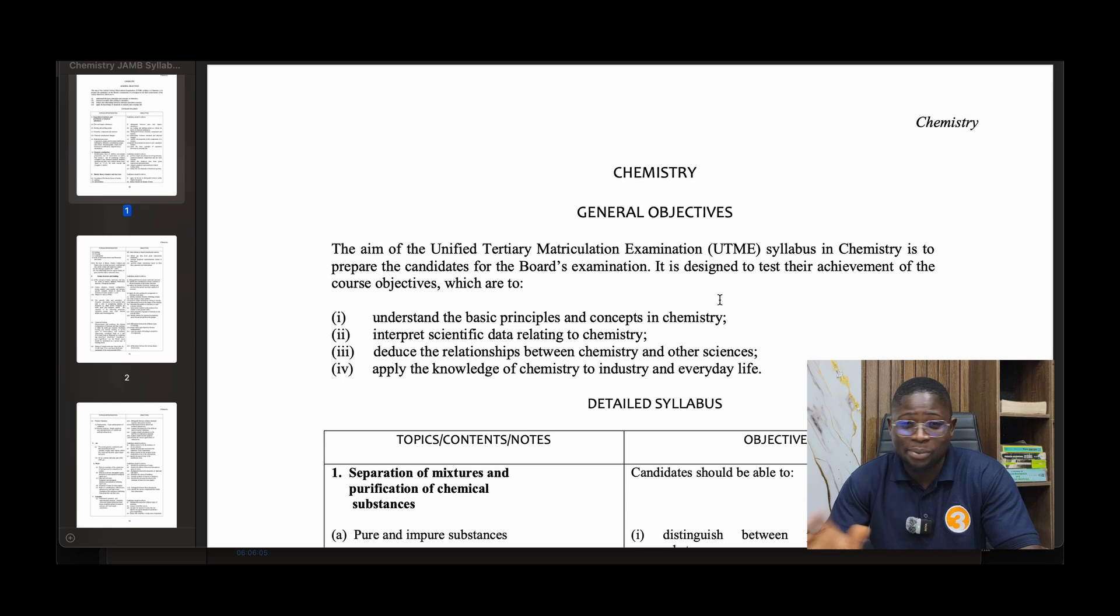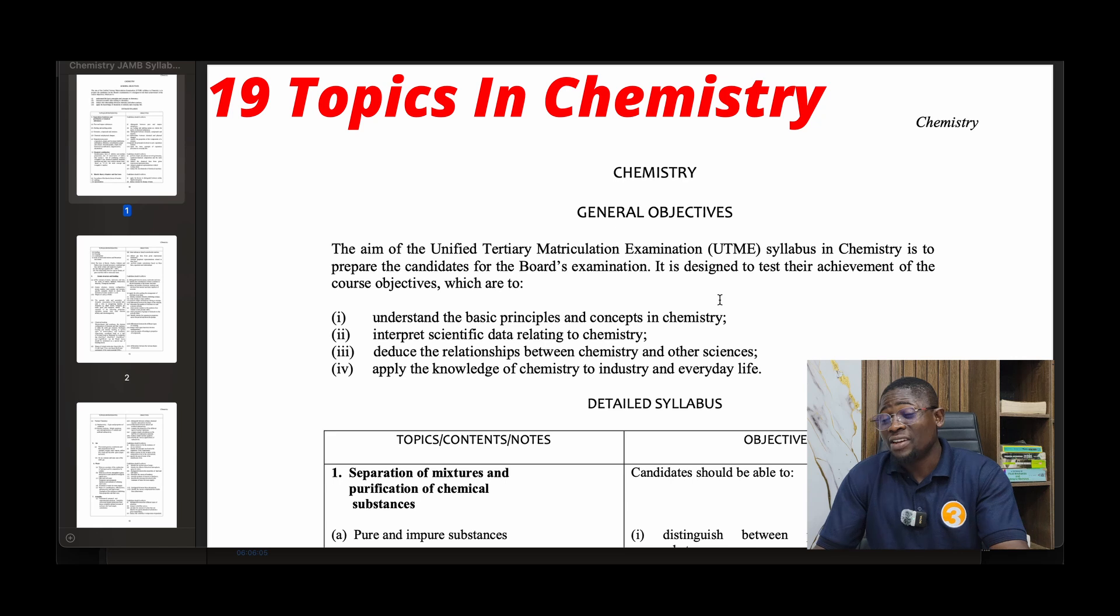Let's see the topics we should focus on for JAMB chemistry. For JAMB chemistry we're going to focus on 19 topics. It's bulky, but it's less than JAMB physics which has about 39 topics, so in about a month you can finish your JAMB chemistry.